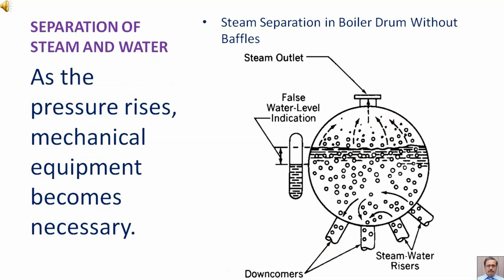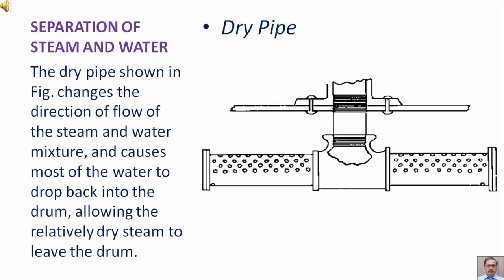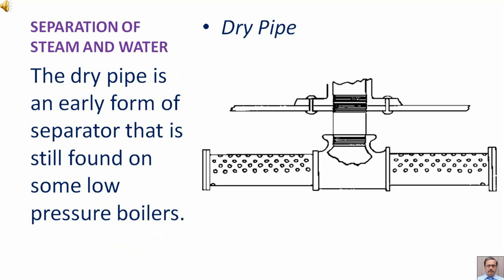As the pressure rises, mechanical equipment becomes necessary. The dry pipe shown in the figure changes the direction of flow of the steam and water mixture and causes most of the water to drop back into the drum, allowing the relatively dry steam to leave the drum.